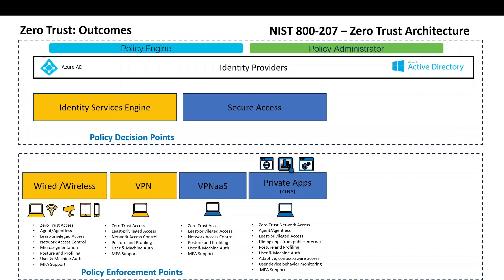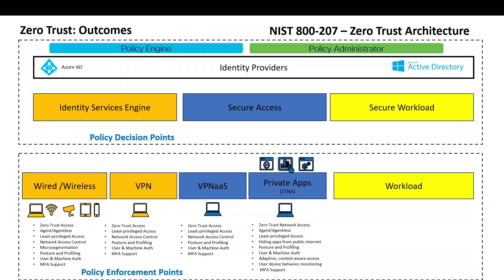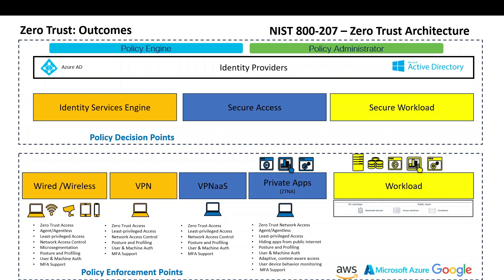Apps run on systems or workloads, so there's an opportunity to add layers of protection at the server level regardless of whether it's Kubernetes, physical, virtual, on-premise bare metal, or in the cloud like AWS, Microsoft Azure, or Google. Again driving toward zero trust — agent and agentless options, least privilege, micro-segmentation, insight into vulnerabilities, application dependencies, and how they communicate, then building and enforcing policy with identity where it makes sense.